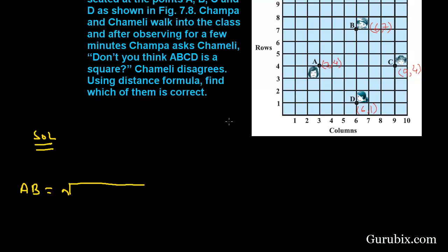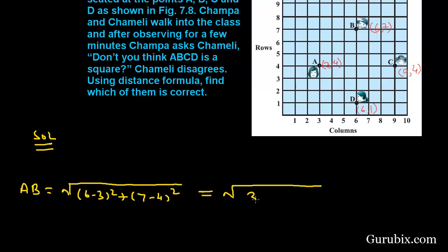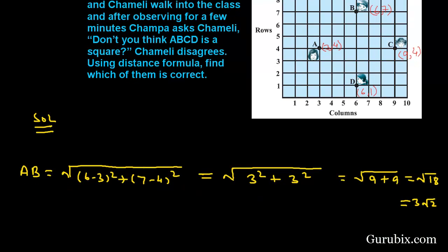AB equals the square root of (6 − 3)² + (7 − 4)², which equals √(3² + 3²) = √(9 + 9) = √18 = 3√2.